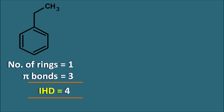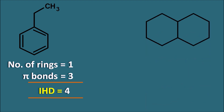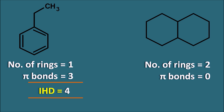The IHD value increases by increasing the number of pi bonds or by increasing the number of cyclic ring systems. For example, a compound having two cyclic rings and no pi bonds gives an IHD value of 2. In this way, just by seeing the structure, we can identify the number of rings and pi bonds present and combine them to get the IHD value.